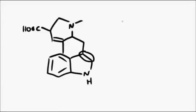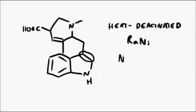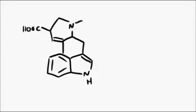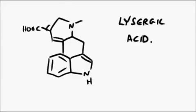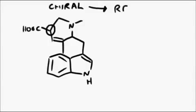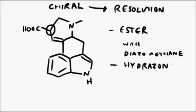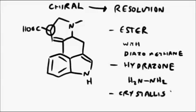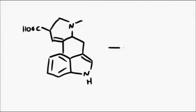The only thing left to do is remove two hydrogens, and heat-deactivated Raney nickel with sodium arsenate was used to affect this reaction. This completes the synthesis of lysergic acid. It won't have escaped notice that this centre is chiral, so the final step was a resolution by forming the methyl ester with diazomethane, then a hydrazone with hydrazine, and a crystallisation to resolve the two enantiomers.